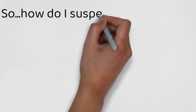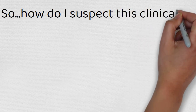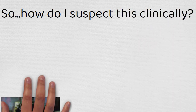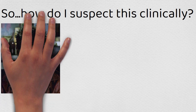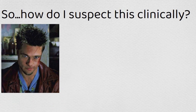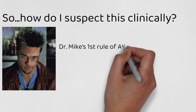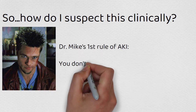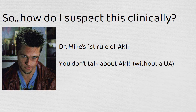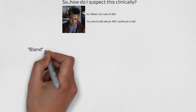So the question lingers — how do you suspect this clinically? Because you can memorize those things, but how do you do this in front of a patient? Well, my rule of AKI — the first and only — is you don't talk about AKI without a UA. It's like a biopsy; you have to look at what's happening in the urine.